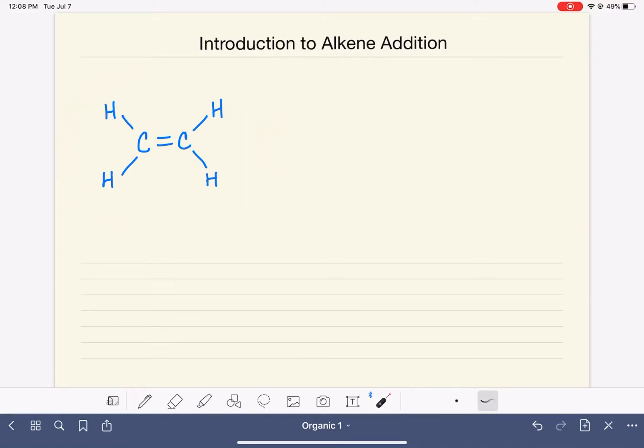One of the types of reactions that an alkene can perform is called an addition reaction. In the addition reaction, we react our alkene with another reagent, which I'm going to abbreviate as XY. In a minute, I'm going to give you a list of all the different types of molecules that can be used as X and Y in the alkene reaction.